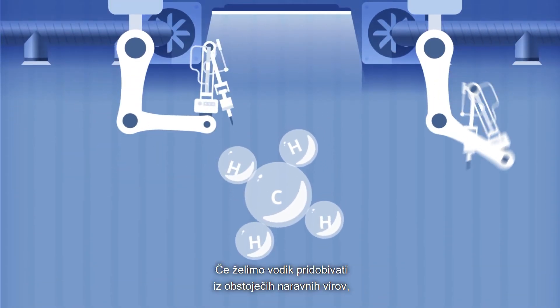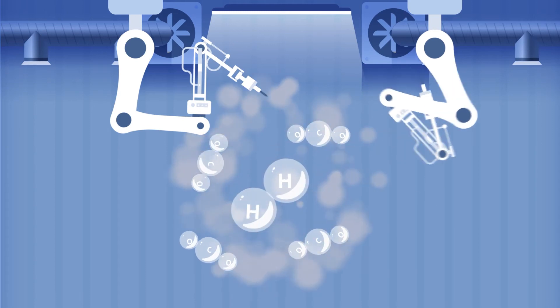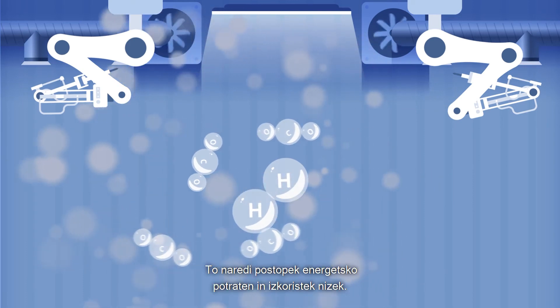If we want to produce hydrogen from existing natural sources, we have to split them. In the process, other gases, such as carbon dioxide, form, so we need to purify it. This makes the process energy consuming and the efficiency low.